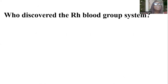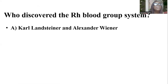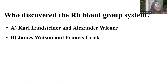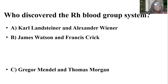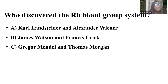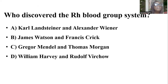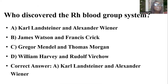Who discovered the RH blood group system? Options include: Wiener and Landsteiner; James Watson and Francis Crick; Gregor Mendel and Thomas Morgan; William Harvey and Rudolf Virchow. And the answer is A — Wiener and Landsteiner.